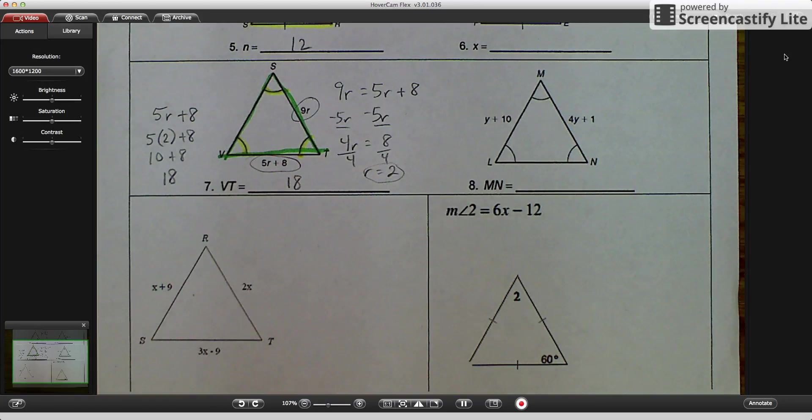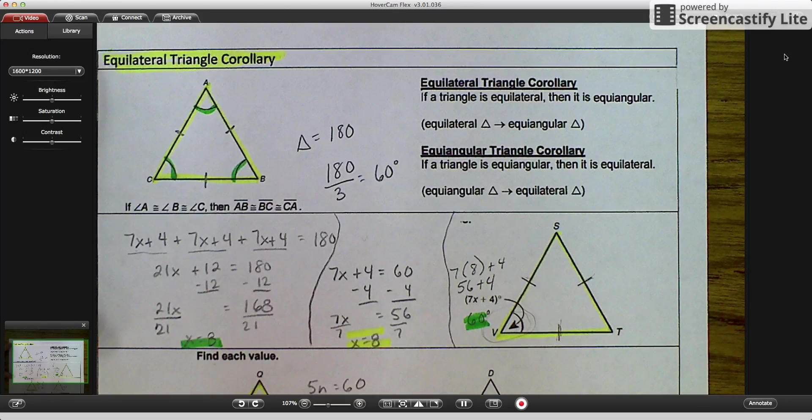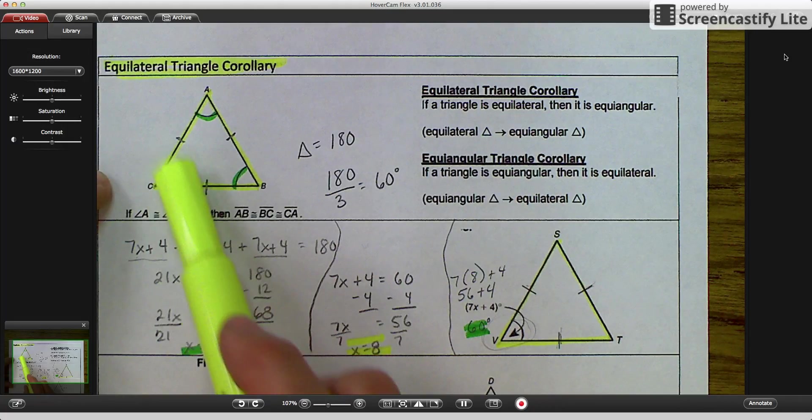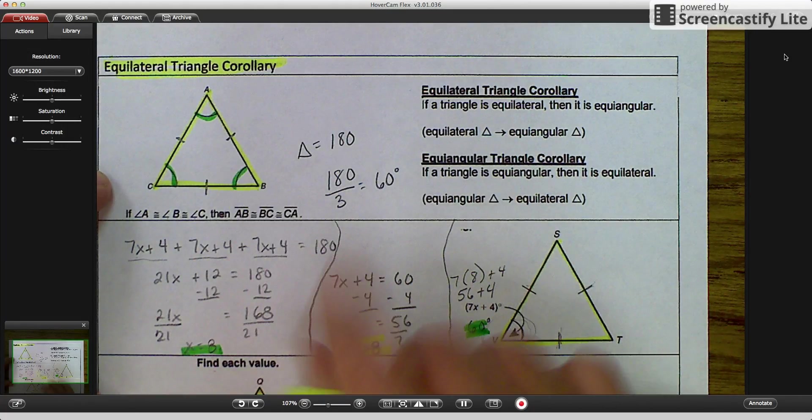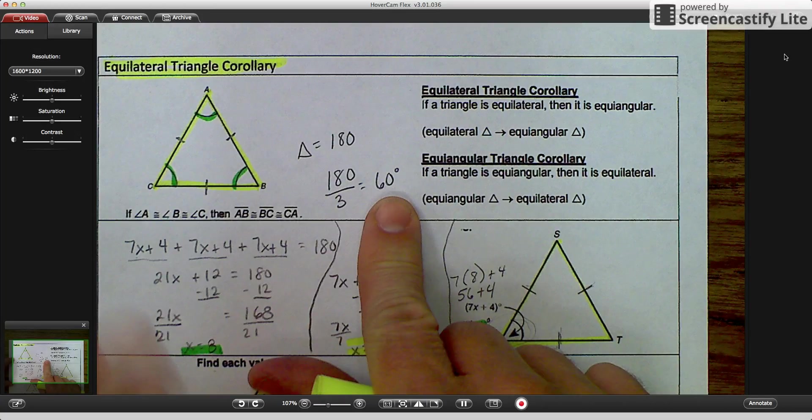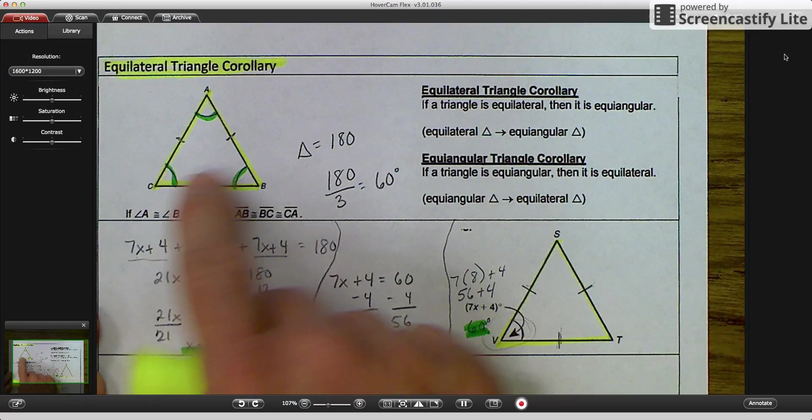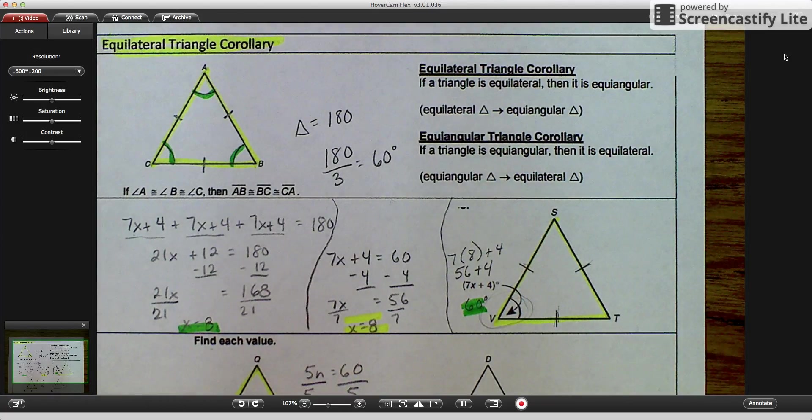But again, the key things to remember are that, and I'll go back to the top of my page here, once a triangle is seen as equilateral, all sides are congruent, then we know that all angles are congruent. And if all angles are congruent, each angle is 60 degrees, 100% of the time. And if it's already equiangular, then we know that it has to be equilateral. Very straightforward. If you have any questions, bring them tomorrow, and we'll go over them. Thank you.